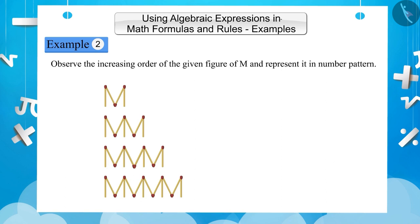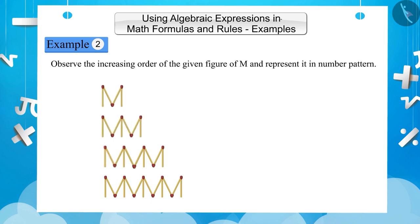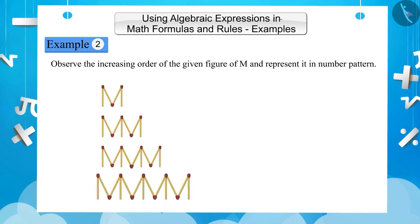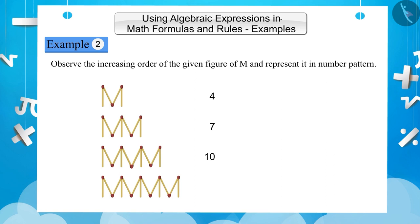In the given figure of M shape, there are four matchsticks in the first figure, but three matchsticks are being added to each growing figure. The first M has one additional matchstick in comparison to the rest. To make a number pattern of the increasing order of the M shape, if we consider the number of matchsticks as a term, we can see that four matchsticks are in the first figure, seven in the second, ten in the third, and thirteen in the fourth.